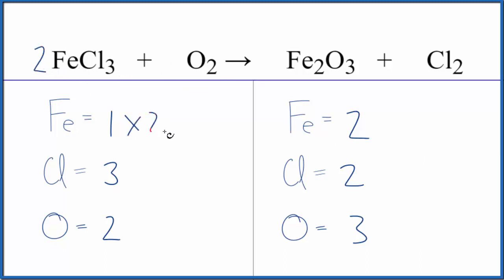1 times 2, that'd give us 2, so those are balanced. For the chlorines, 3 times 2 gives us 6. If we put a 3 in front of the chlorine, that would give us 6.